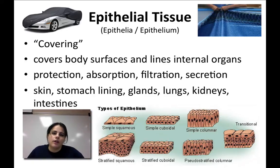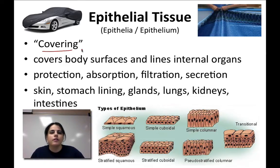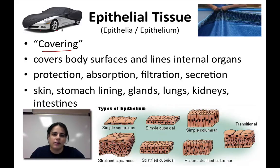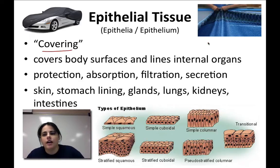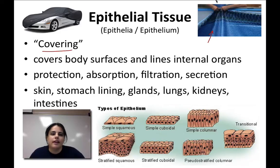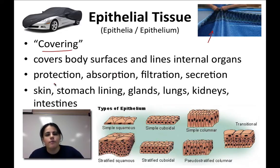The first type of tissue is epithelial tissue — the plural is epithelia, singular is epithelium — and its main job is to cover. Epithelial tissue covers. I put a car cover picture up here because it kind of covers the outside surfaces. Your skin on the outside is made of epithelial tissue, and even on your insides, anything that is exposed — like the inside part of your stomach and your intestines — that inside part is epithelial tissue. So they cover and line the body on the inside, and cover it on the outside. Because it lines and covers body surfaces, it has four major functions.